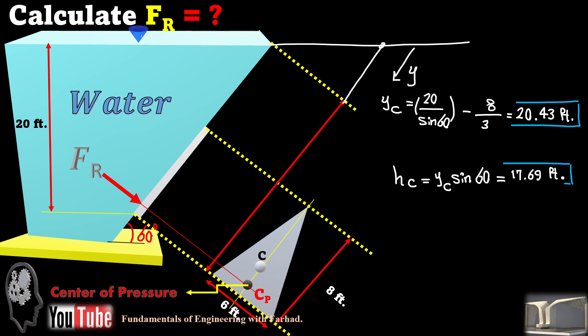And then h of c, it's height of centroid. Again, you have to translate it in vertical direction and it will give you h sub c is y sub c times sine of 60 degrees, which is 17.69 feet. And why we need h sub c: because of calculation of resultant force.